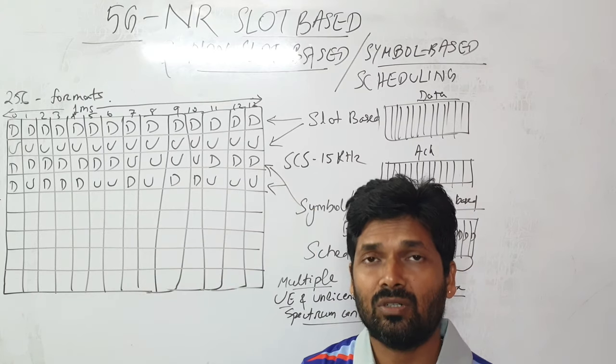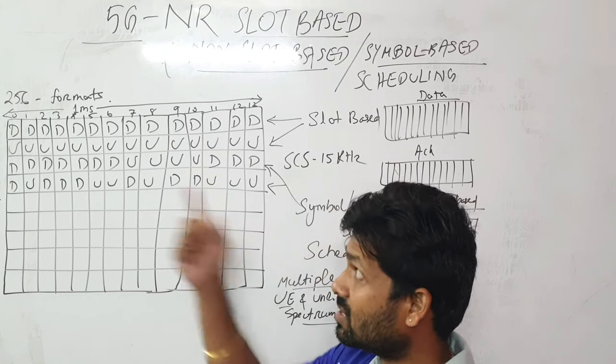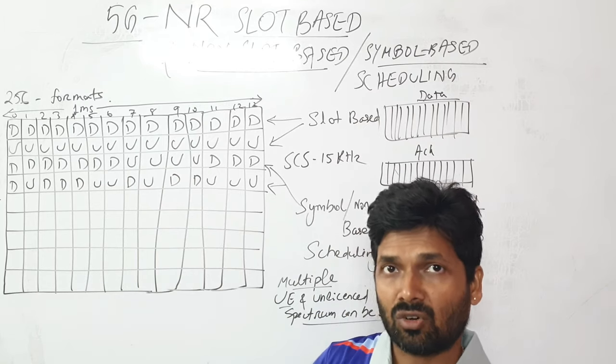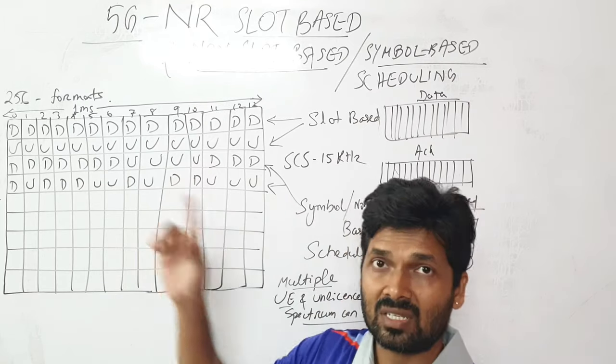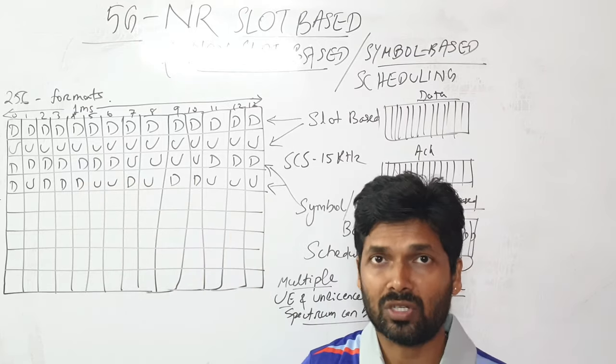These two would be a fine example for non-slot-based scheduling. That means in the same slot I can do the assignments of downlink, uplink, acknowledgement, retransmission - all those in a single subframe or single slot with different configuration and all 14 symbols.